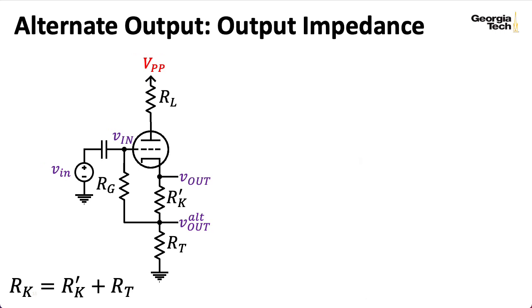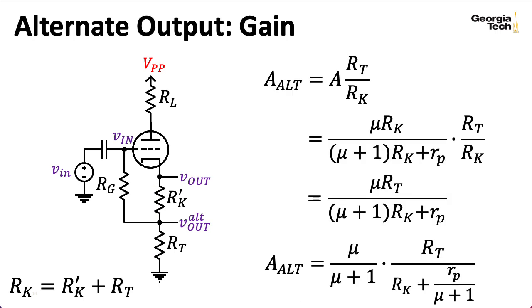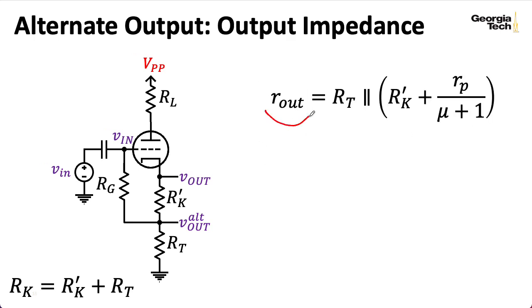So computing the output impedance for this alternate output, again, we're assuming that RG is so big we don't need to worry about it. Well, I have RT in parallel with the resistance seen looking up this direction, which is RK prime plus that little RP over mu plus one. Now, if you want, you can take the various quantities we computed for the Dumbleator, plug them into the expression for A_ALT here, and plug them into the expression for R out here, and see what the small signal gain and output impedance is for this output instead of this output. I don't actually recommend that you bother doing that because the answers don't differ very much.